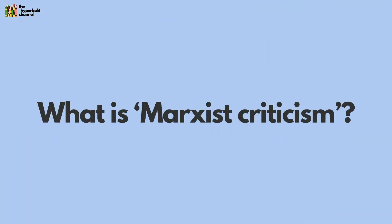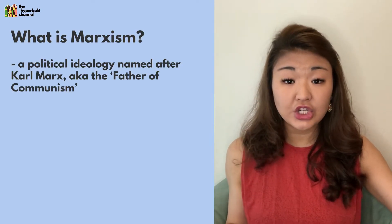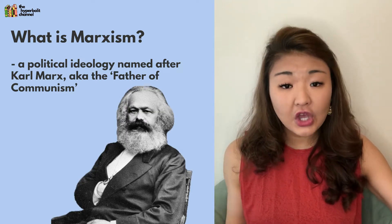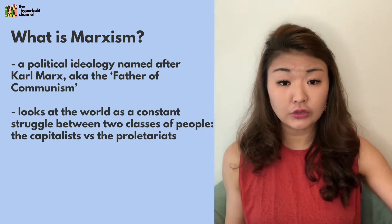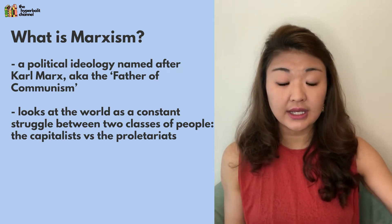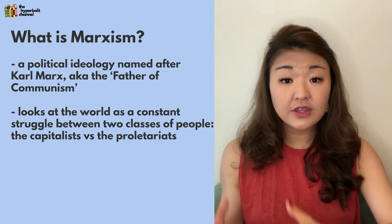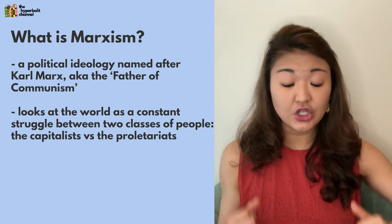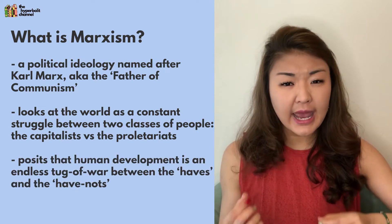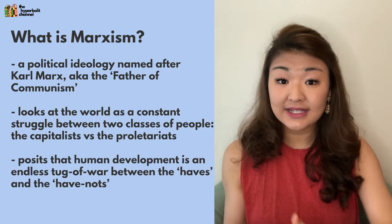So first, let's establish what Marxist criticism is. On the most fundamental level, Marxism is a political ideology named after Karl Marx, aka the father of communism, and it's concerned with looking at the world as a constant struggle between two predominant classes of people: the capitalist — your business people and asset owners — and the proletariat — your labourers and wage earners. In simpler terms, Marxism posits that human development is an endless tug of war between the haves and the have-nots.